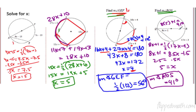Next example — this one is a little more straightforward. 8x plus 1 is equal to half the measure of the intercepted arc. You could multiply both sides by 2 to get rid of the half, giving 16x plus 2 on this side. Work through the algebra and you get x equals 5. Then plug that back in because they want the measure of angle RQS. You get 41 degrees.